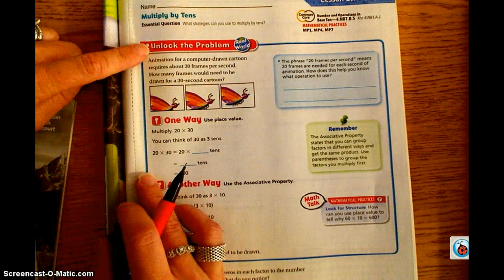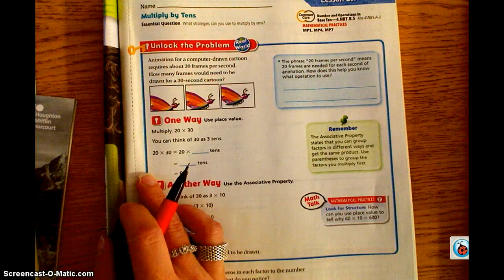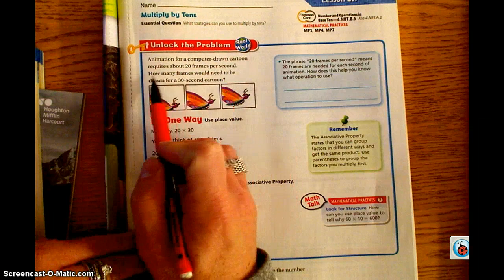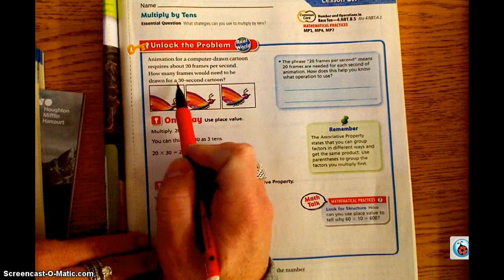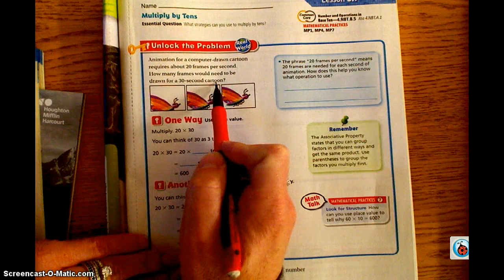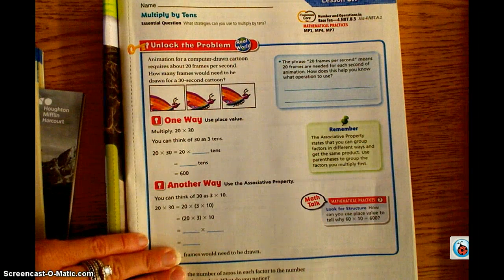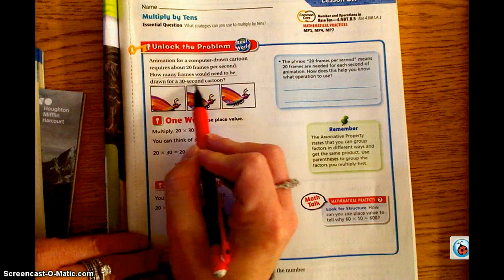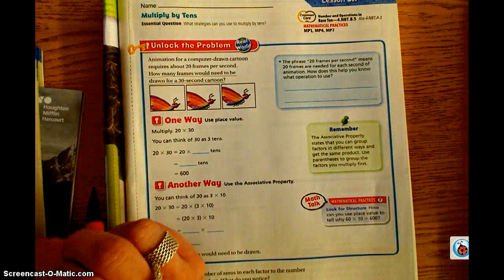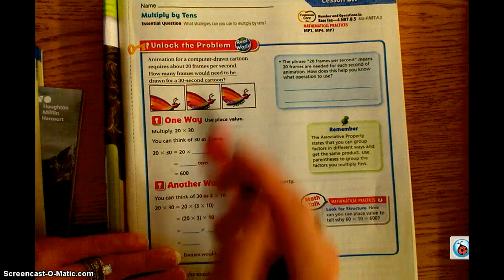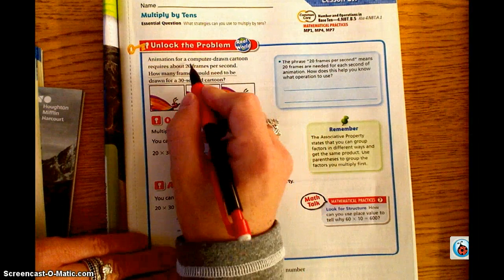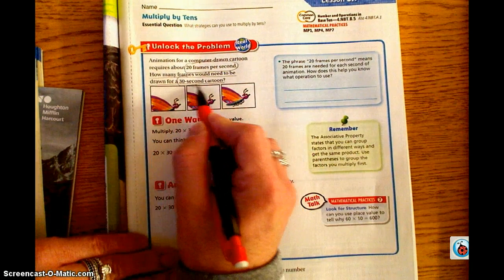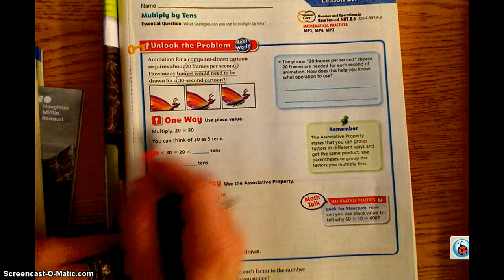We're going to move down to unlock the problem. It says animation for a computer drawn cartoon requires about 20 frames per second. How many frames would need to be drawn for a 30 second cartoon? If we remember back from our little chant, we need to underline what we need to find. So we need to find how many frames would need to be drawn for a 30 second cartoon.